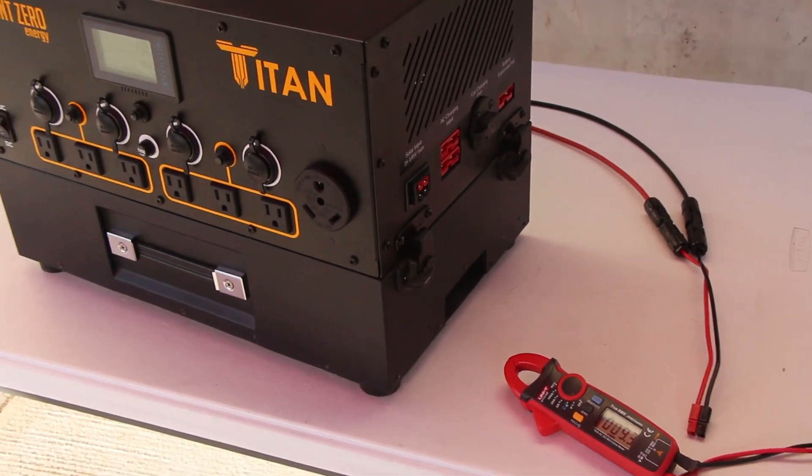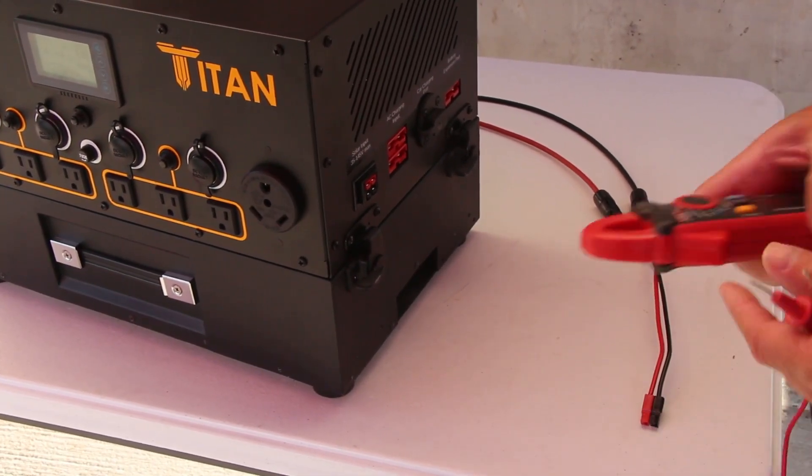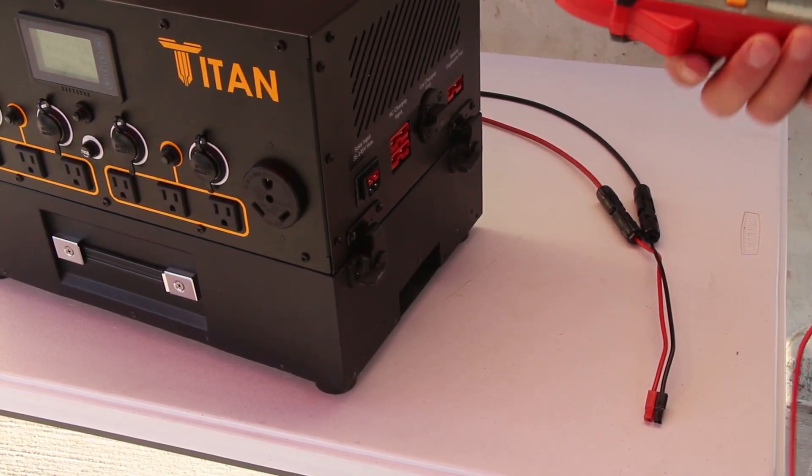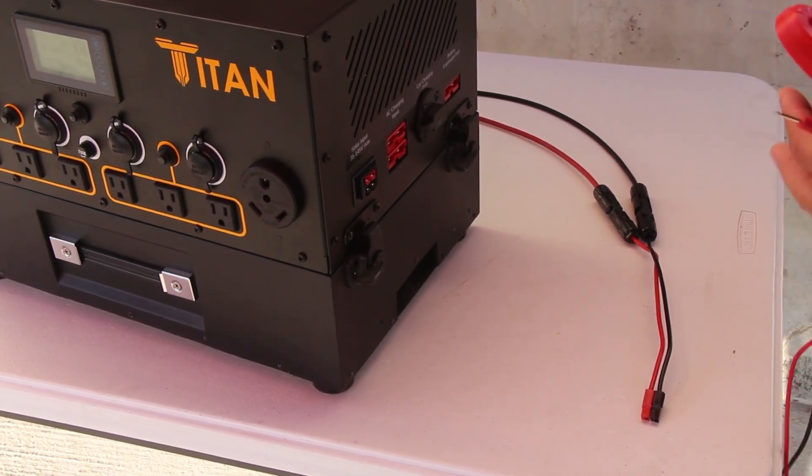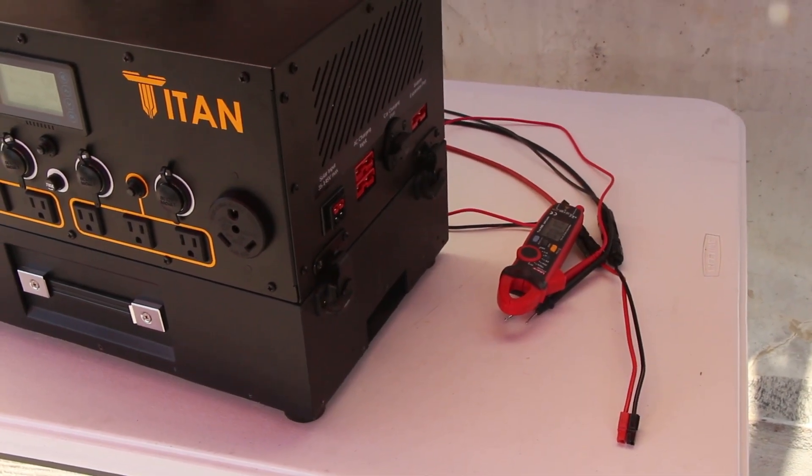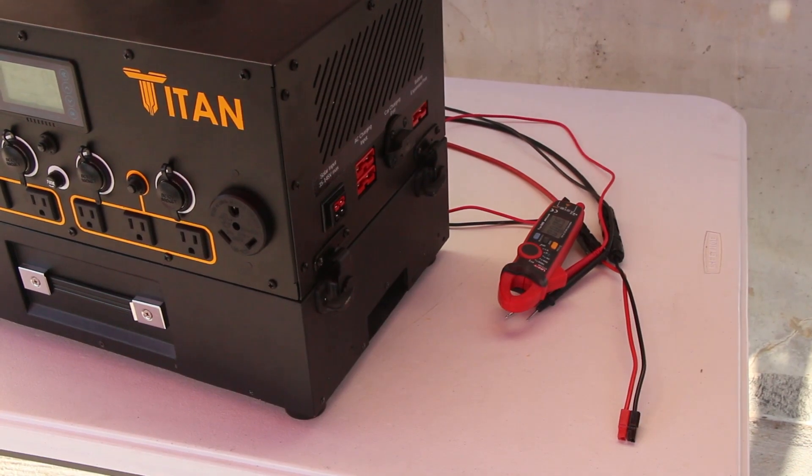It's called the short circuit current. And so to do that, first of all what you want to do is you want to turn your solar panels out of the Sun, so I'm going to flip mine over so that it doesn't spark.